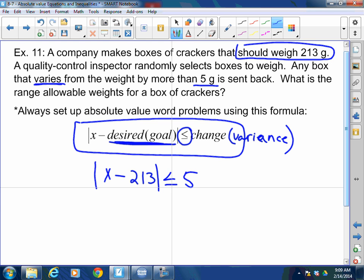Negative side. Remember, you're multiplying the non-absolute value by a negative. Negative, in this case, you flip the inequality, and you solve. Add 213, x can be less than or equal to 218. Add 213, x can be greater than or equal to 208.